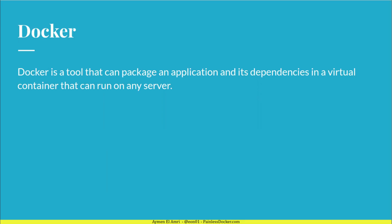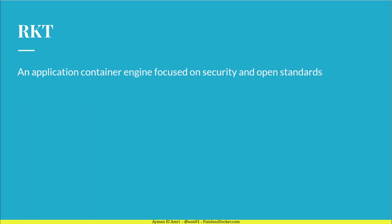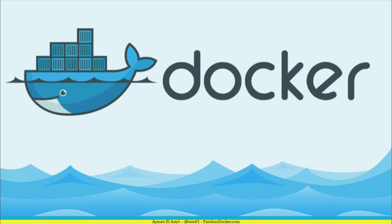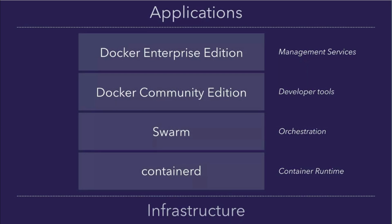Docker is the tool that can package an application and its dependencies in a container that can run on almost any server. Rocket is an application container engine focused on security and open standards. As we have seen, Docker is not the first containerization technology but it's the most known one. This technology was introduced in 2013. Docker stands between the infrastructure and the application stack, and it's composed of an industry-standard container runtime called containerd, a native orchestration tool called Docker Swarm, Docker Community Edition which is the open source version, and the Enterprise Edition that provides commercial management services.